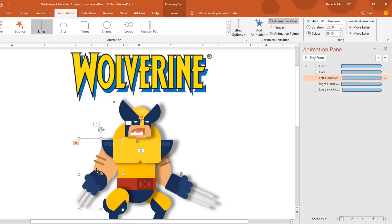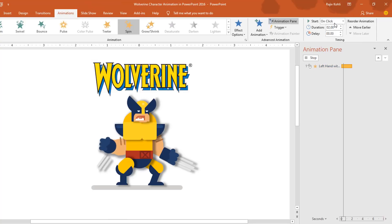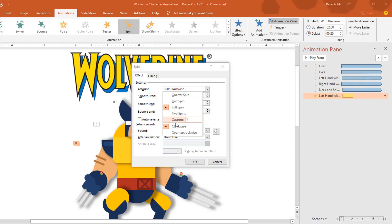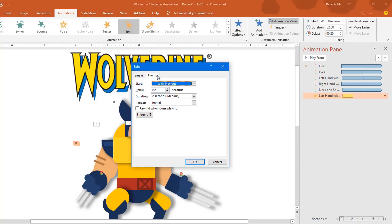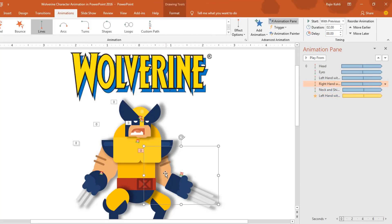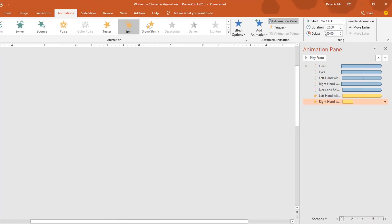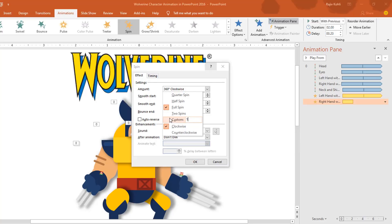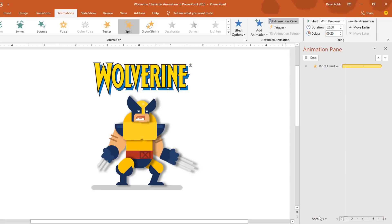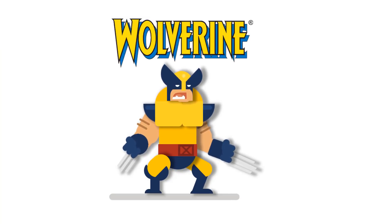Now I'll apply a Spin animation to the left hand. Select the left hand, go to Add Animation, apply Spin, set it to Play With Previous, open the Effect Options window, and set it to a 10-degree rotation clockwise with Auto Reverse, repeating until end of the slide. For the right hand, select it, go to Add Animation, apply Spin, set it to Play With Previous, open Effect Options, and set it to rotate 10 degrees counterclockwise with Auto Reverse, repeating until end of the slide.